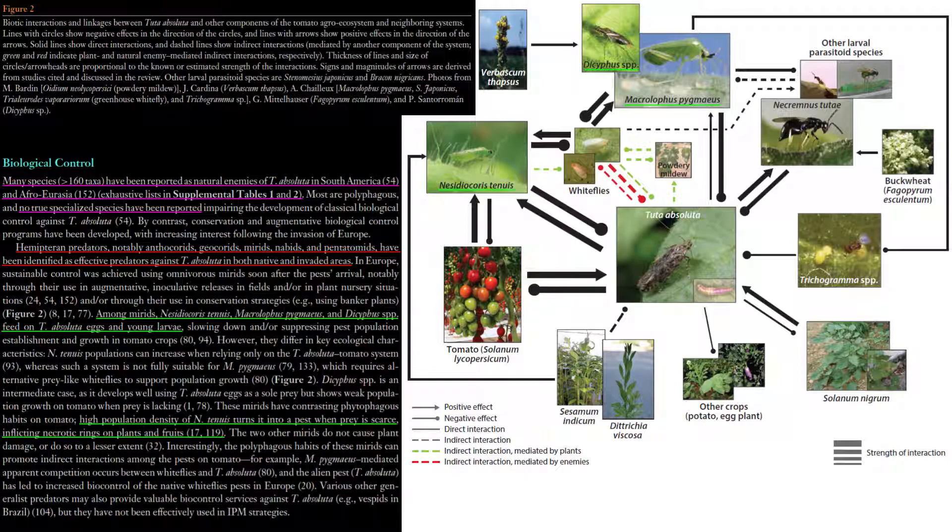Populations of tomato leafminer moth known to be deuteroticously parthenogenetic are resistant to pheromone traps that attract males, as well as sterile insect technique, as the females in such populations can produce both male and female offspring and may do so if male presence or fertilization doesn't exist.